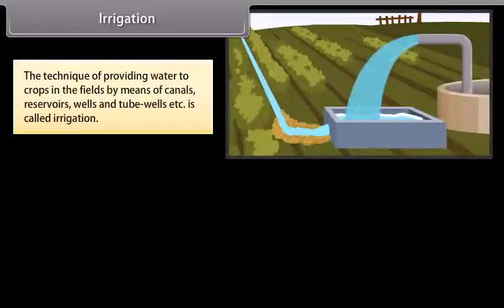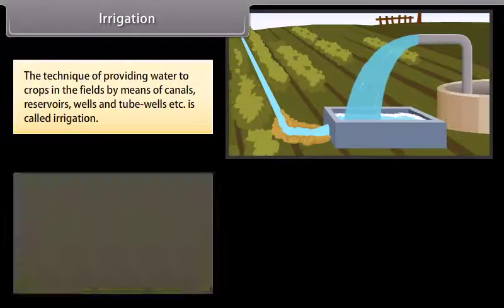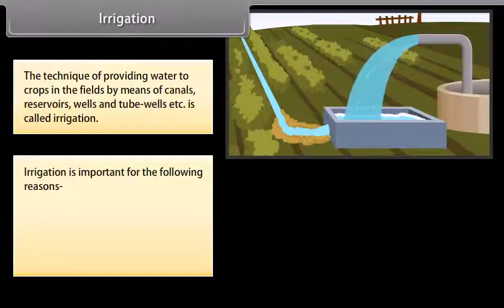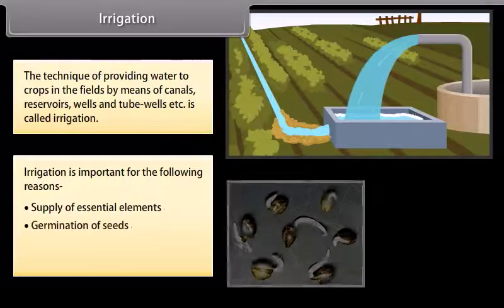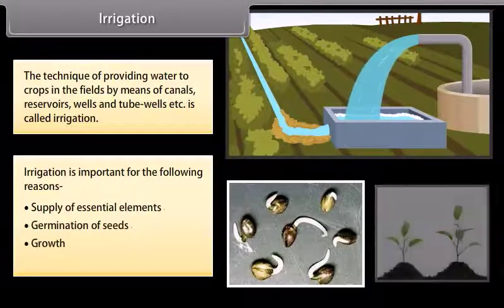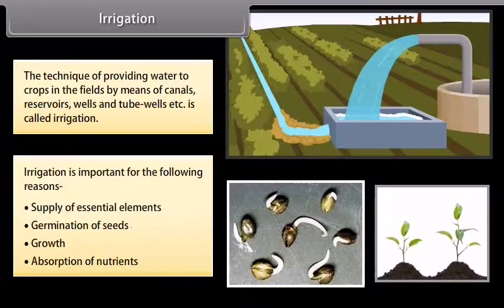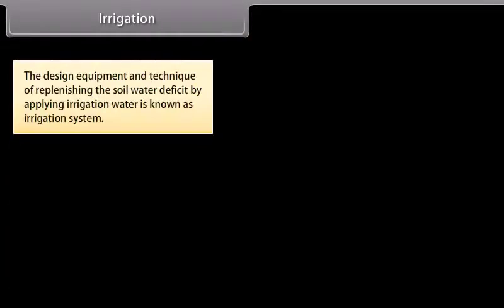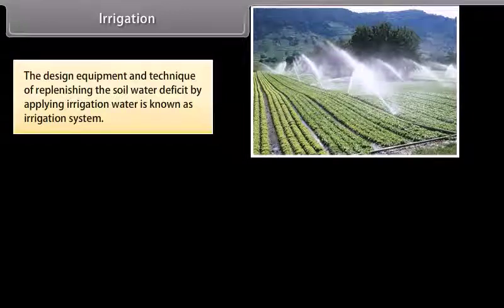Irrigation is the technique of providing water to crops in the fields by means of canals, reservoirs, wells and tube wells. It is important for the supply of essential elements, germination of seeds, growth and absorption of nutrients. The design, equipment and technique of replenishing the soil water deficit by applying irrigation water is known as an irrigation system.